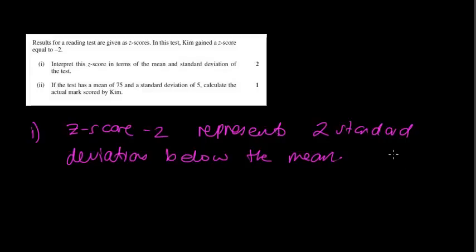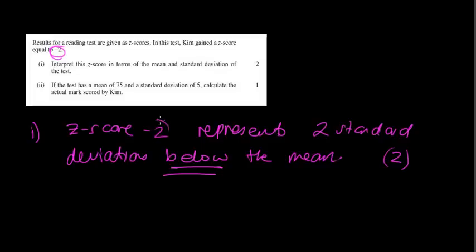It's worth two marks, so most likely if you said it represents two standard deviations, you would get one mark. Then you have to actually specify it's below the mean because it was negative 2 — and obviously that negative gives you your second mark.